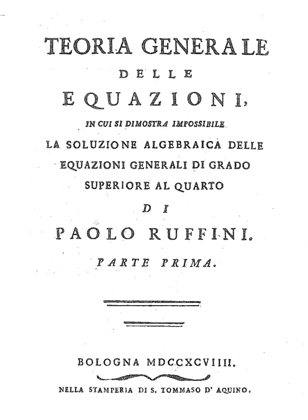The first person who conjectured that the problem of solving quintics by radicals might be impossible was Carl Friedrich Gauss, who wrote in 1798 in section 359 of his book Disquisitiones Arithmeticae—published only in 1801—that 'there is little doubt that this problem does not so much defy modern methods of analysis as that it proposes the impossible.' The next year, in his thesis, he wrote that 'after the labors of many geometers left little hope of ever arriving at the resolution of the general equation algebraically, it appears more and more likely that this resolution is impossible and contradictory.' He added, 'perhaps it will not be so difficult to prove, with all rigor, the impossibility for the fifth degree.' However, Gauss published nothing else on this subject.